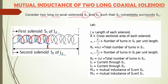L1 and L2 are the lengths of S1 and S2, but both have the same length, so we take L1 = L2 = L, where L indicates the length of each solenoid. A is the cross-sectional area of each solenoid — both have the same area.